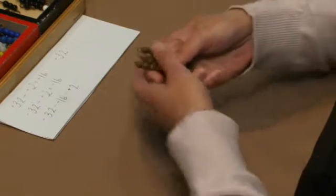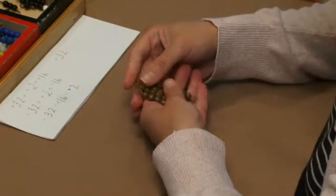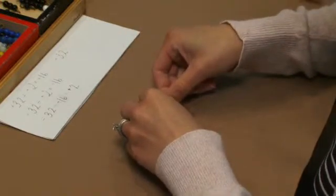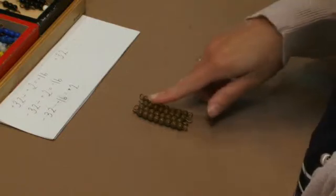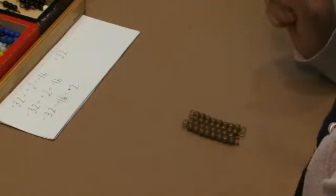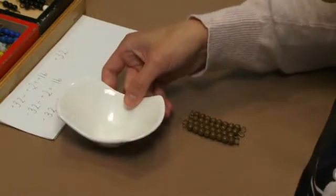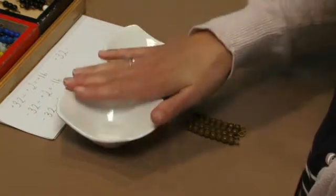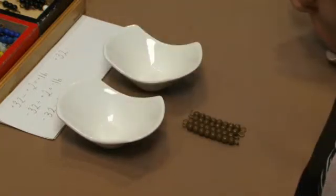In this last example, I would start by telling the students that I have 32 dollars. We're going to represent that again with our four 8-bars, our four positive 8-bars. But I owe money to two bill collectors. So we're going to use bowls to show our debt collectors, our bills that we're going to pay.